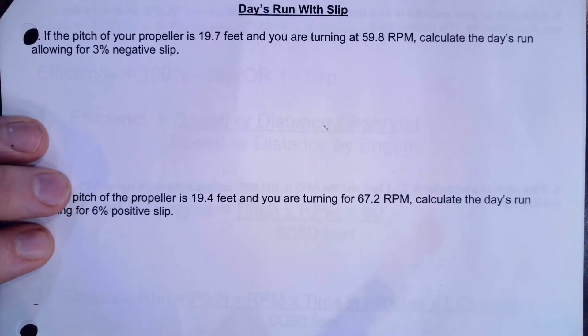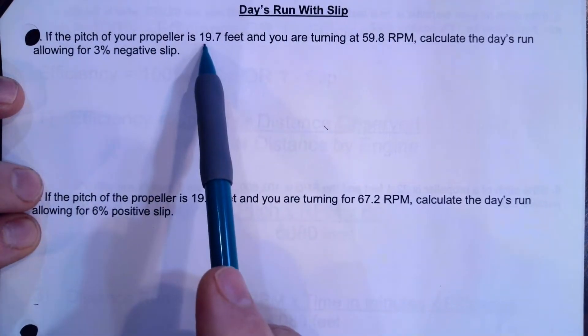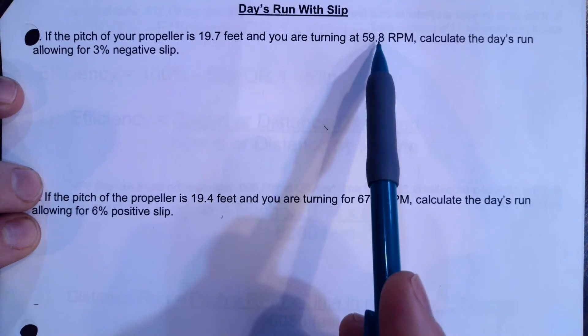Okay, so this is another kind of problem we're going to do, which is calculating day's run for given slip. So in this situation, our pitch is 19.7 feet. We're turning 59 RPM, almost 60 RPM.